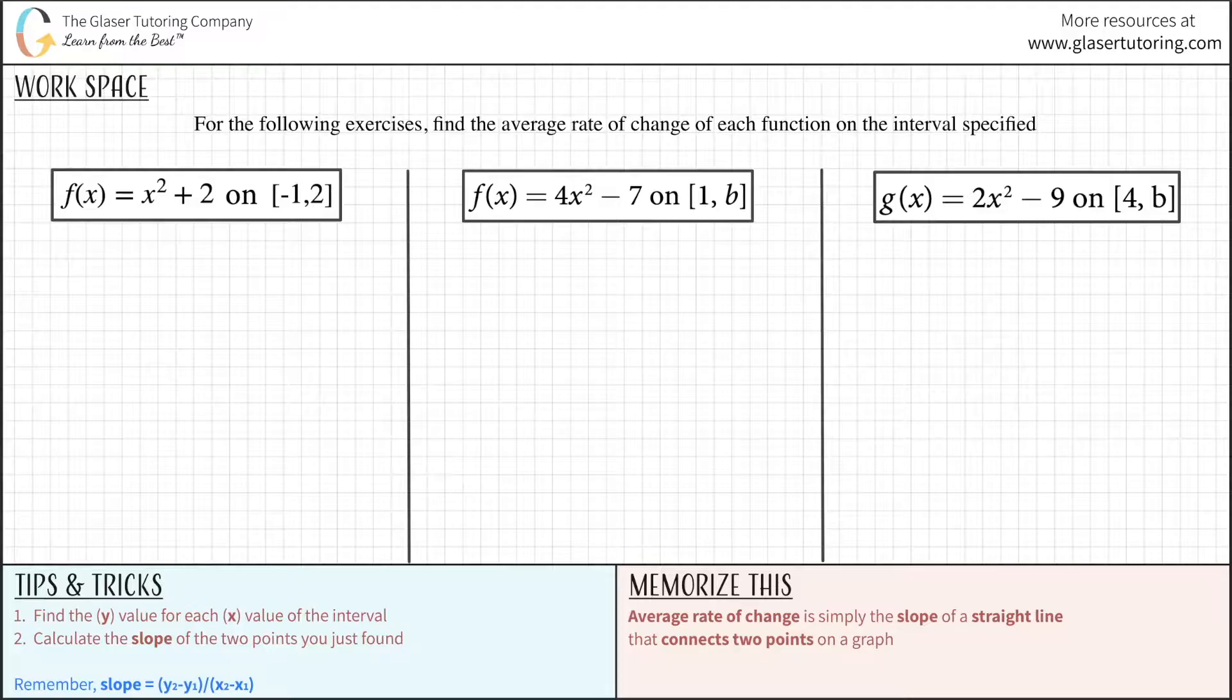For the following exercises, find the average rate of change for each function on the interval specified. Let's recall what average rate of change is - it's simply the slope of a straight line that connects two points on a particular graph. I'm going to look at this first one graphically; I think it gives a little better intuition as to how to view the concept of average rate of change.